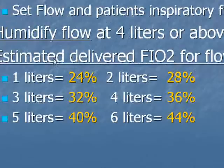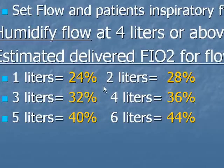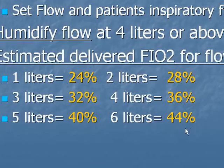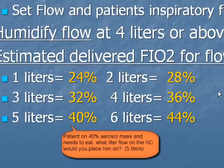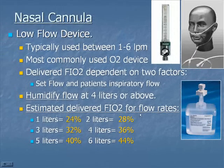You should know the general ranges of oxygen percentage you'd be delivering based on the flow set on the cannula: 1 liter is around 24%, 2 liters is 28%, 3 liters is 32%, 4 liters is 36%, 5 liters is 40%, and 6 liters is about 44%. For the national boards, they might tell you a patient is on a 40% aerosol mask and wants to eat — you should know to put them on a comparable 5-liter nasal cannula.